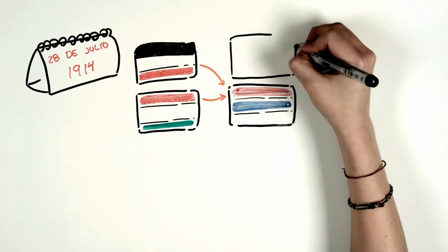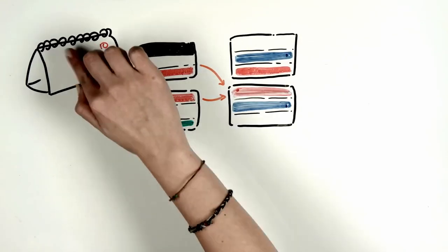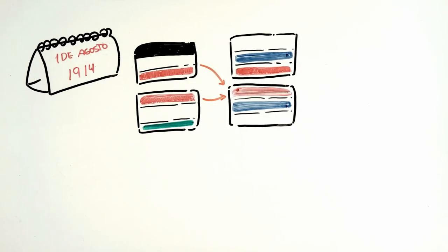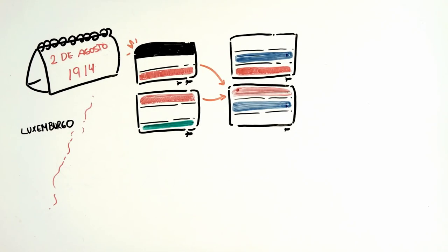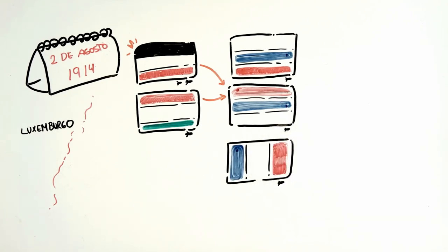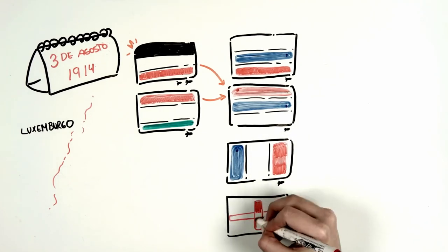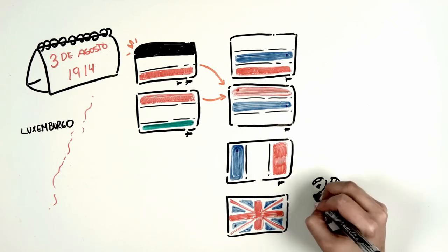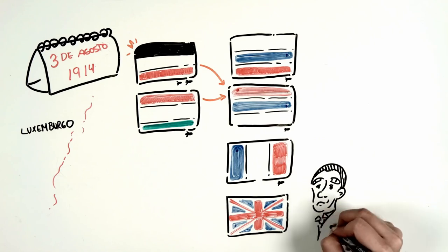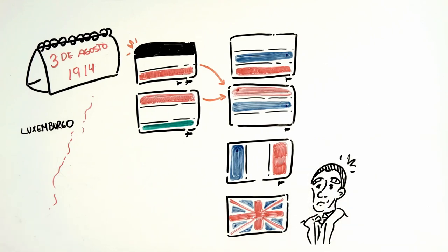Russia supported Serbia, and on August 1st, Germany declared war on Russia. On August 2nd, German troops crossed the Luxembourg border, also declaring war on France on August 3rd. That same day, the war was a fact, and the British Foreign Minister spoke these words: 'The lights go out now all over Europe. It may happen that we never see the lights again.'